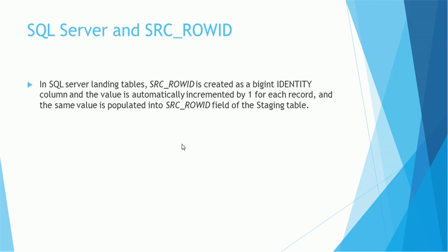In SQL Server, there is no row ID functionality. However, there is a functionality called bigint identity that is used instead. In SQL Server, the landing table source row ID is created as a bigint identity column, and the value is automatically incremented by one for each record. The same value is then populated in the source row ID field of the staging table. So the structure of the landing table differs between Oracle and SQL Server, but the intention — to populate the source row ID to trace back the landing record — is exactly the same.